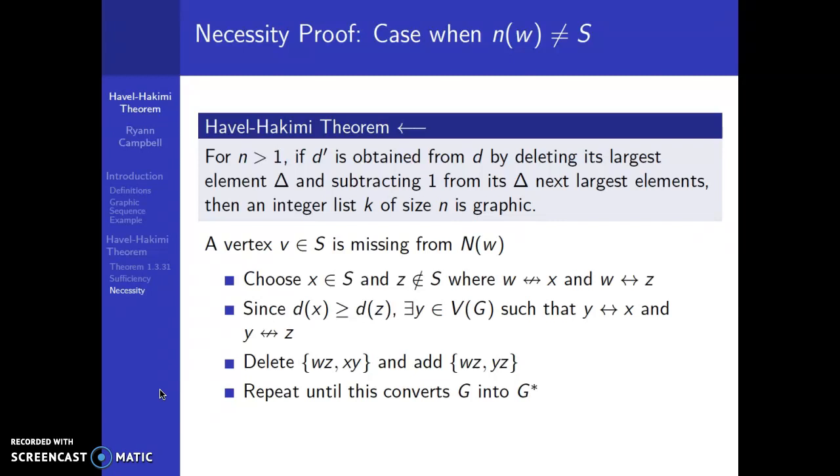And once we replace those two edges with the other two edges, we are going to have one more vertex that was not in the neighborhood of w that gets added into the neighborhood of w, and it is now also in S. So we are trying to make it so that the intersection between the sets S and the neighborhood of w becomes exactly those sets. It's just one set and they're exactly the same. So we've gotten one step closer to doing that.